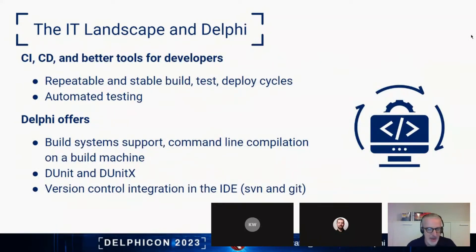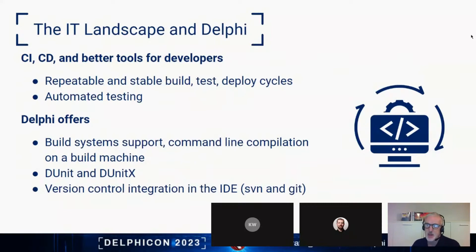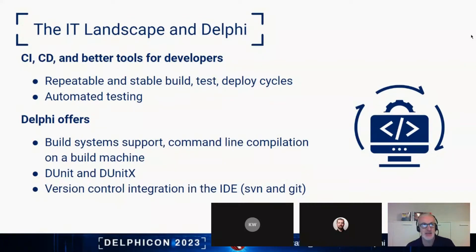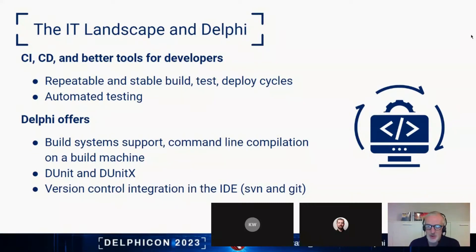For DevOps, developers want automated testing and repeatable, stable build systems. We support a lot of build systems, support command-line compilation on a build machine, integrate DUnit and DUnitX — two popular unit testing solutions for Delphi code — and offer version control integration in the IDE. The way our source code is structured, mapped to text only, allows for smooth and easy integration with version control systems.